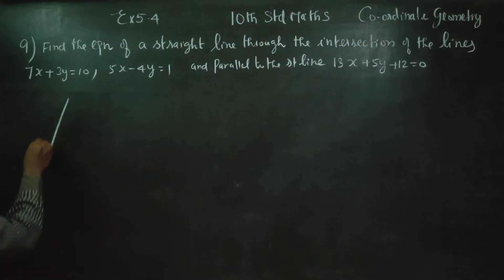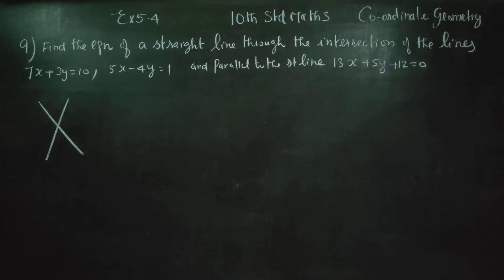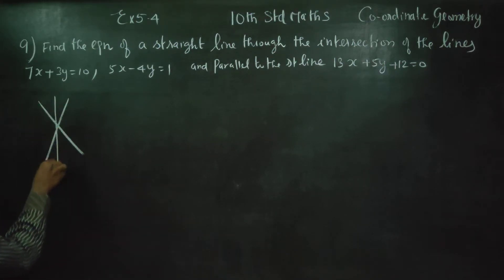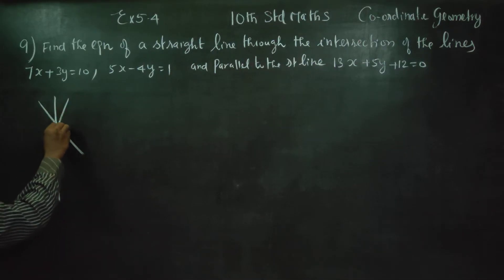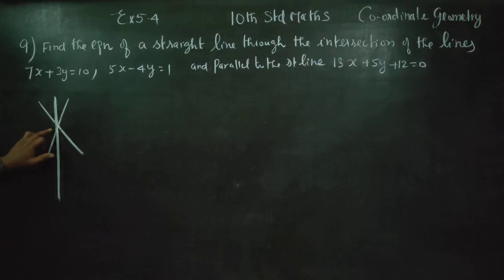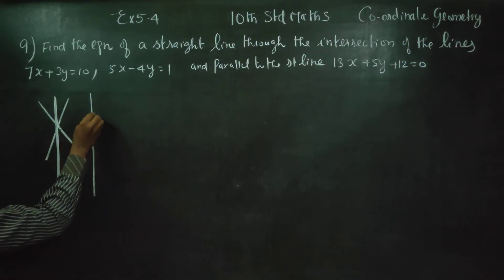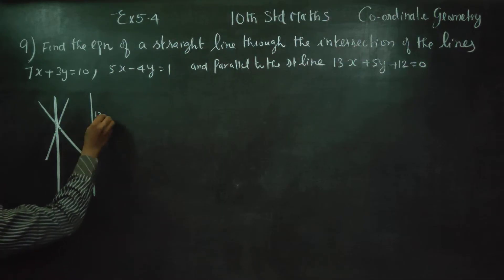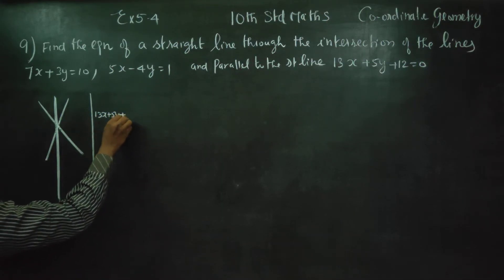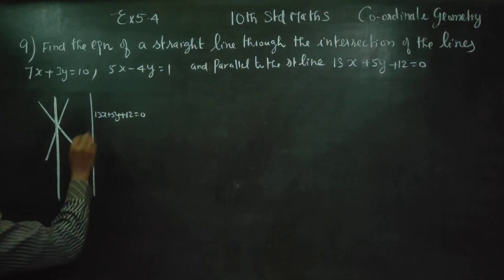When two lines cut each other, where do they cut? That is the point of intersection. We need a straight line passing through that point of intersection, and parallel to the straight line 13x plus 5y plus 21 is equal to 0.